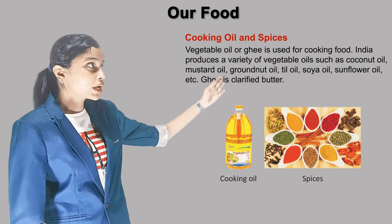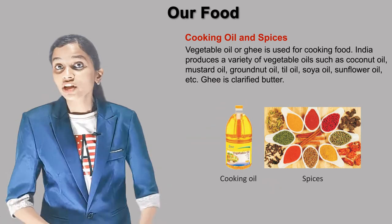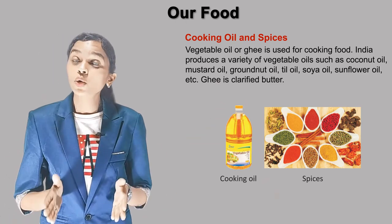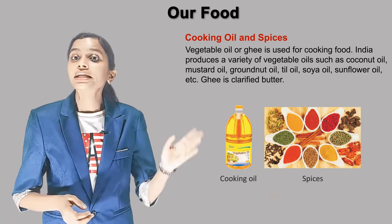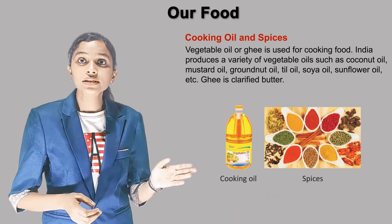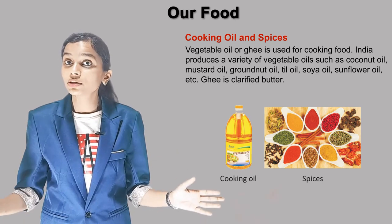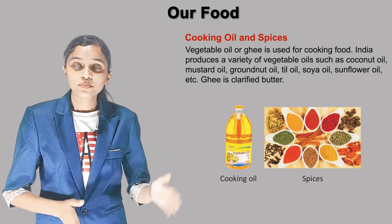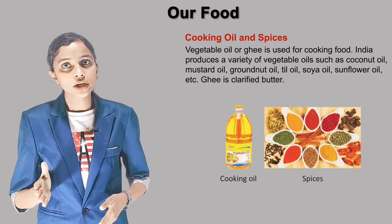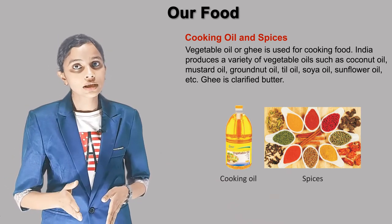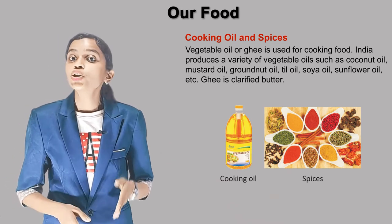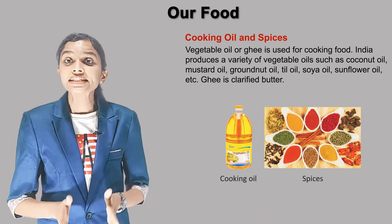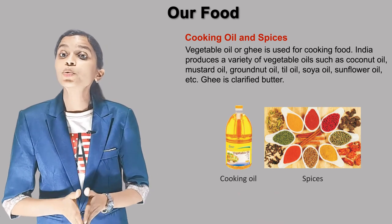Cooking oil and spices: Vegetable oil or ghee is used for cooking food. India produces a variety of vegetable oils such as coconut oil, mustard oil, groundnut oil, till oil, soya oil, and sunflower oil. Ghee is clarified butter.